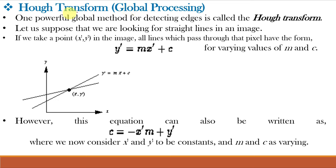The better solution is global processing via the Hough transform. The Hough transform has emerged as the method of choice for pixel linking and edge detection. It is a very powerful global method for detecting edges. Given a set of discrete pixels, the Hough transform checks if these points lie on a straight line and, if yes, it draws a line joining all these points.